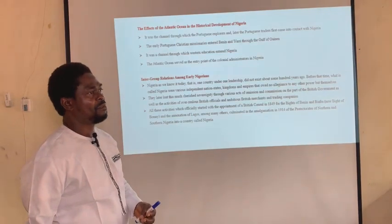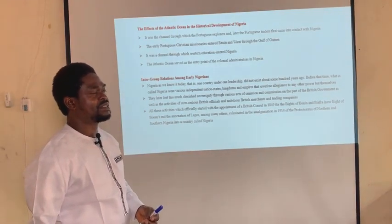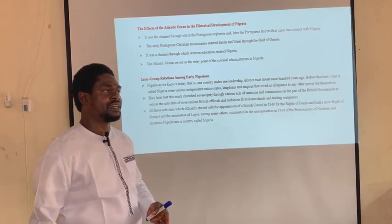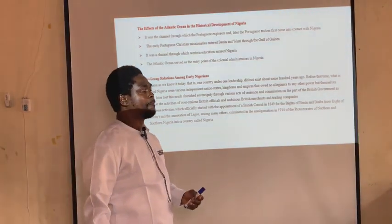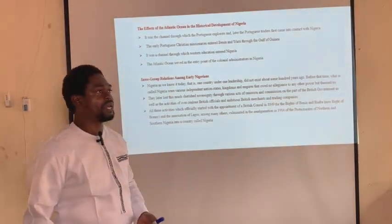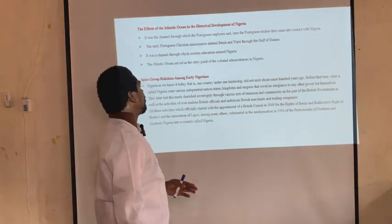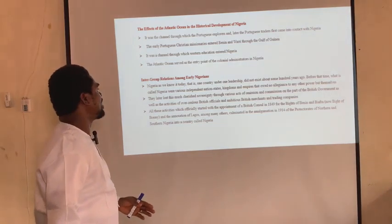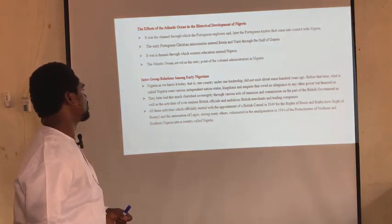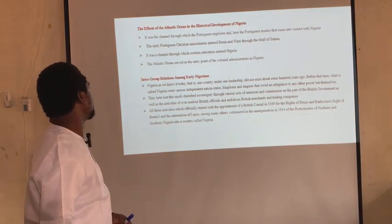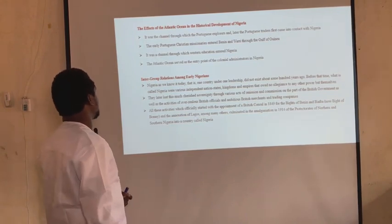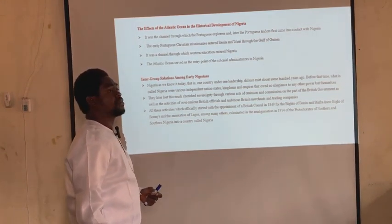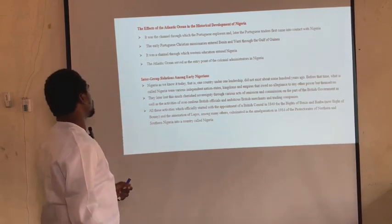The effect of colonial administrators coming to Nigeria was significant. Nigeria's sovereignty was lost. The empires that existed in the Nigerian area — like the Borno-Kanem Empire, the Oyo Empire, and the Benin Empire — all collapsed with the coming of the British colonial administrators into Nigeria.